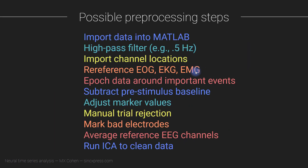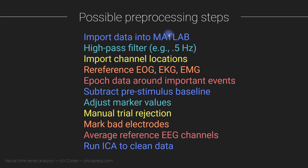What I'm going to do now is walk you through briefly this list of possible preprocessing steps. These are not all steps you necessarily have to follow in this order — it really depends on the kind of data you have and what you're looking for. Take this list as more of an inspiration to start from; it likely needs to be modified to your specific data. The first step, of course, is to import the data into MATLAB. This entire course is focused in MATLAB because over 95% of the field of neuroscience electrophysiology time series analysis uses MATLAB, though you can exchange this for Python, Julia, or another environment.